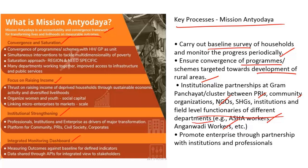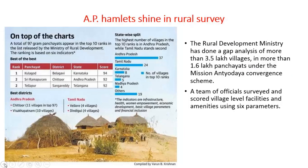Mission Antyodaya also aims to promote enterprise through partnership with institutions and professionals, encouraging the rural population to develop entrepreneurial acumen to improve economic well-being. The survey by the Rural Development Ministry is based on six broad indicators: infrastructure, health, women empowerment, economic development, basic village parameters, and financial inclusion. The Kulagod panchayat in Belagavi district of Karnataka has scored the highest rank in the survey.